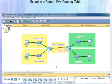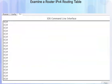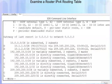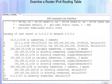Let's look at the R1 routing table more closely now that we know about these connected networks and these remote networks. I'll put in the command show IP route to examine the routing table.